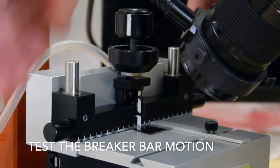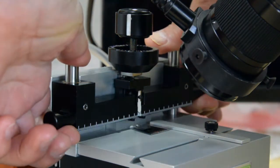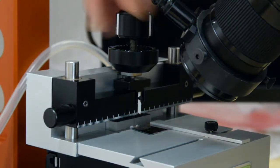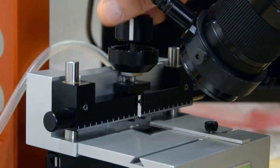If your breaker bar does not go up and down smoothly when you turn the indenter knob, you will need to make adjustments.